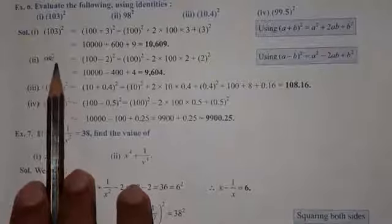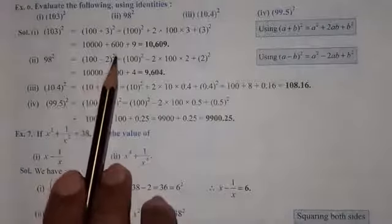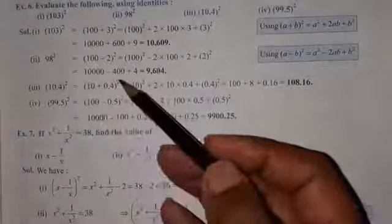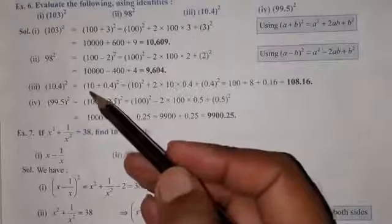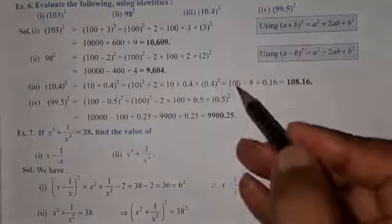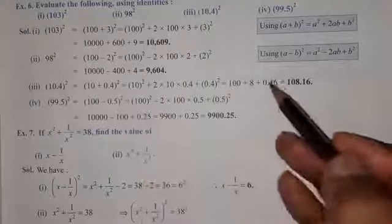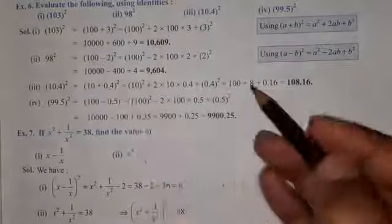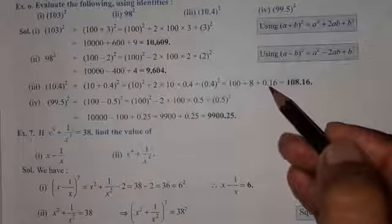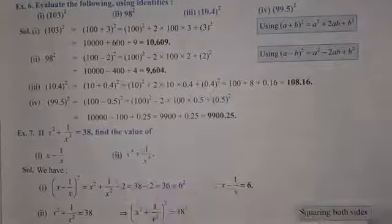98 का square: break it as (100 - 2), use (a-b)² identity, and get the answer. Then a decimal example: 10.4 square — break it as (10 + 0.4). Square of 10 is 100, then 2 into 10 into 0.4 gives 8, and (0.4)² gives 0.16. Adding these: 100 + 8 + 0.16 = 108.16.